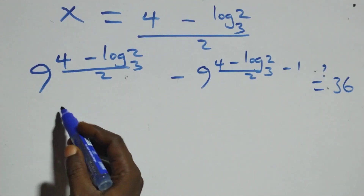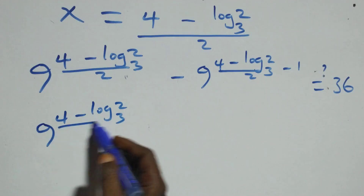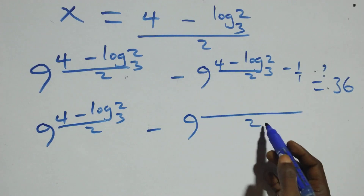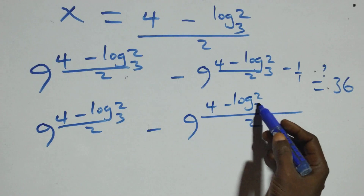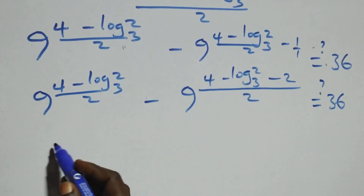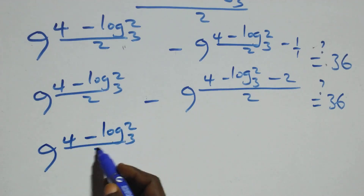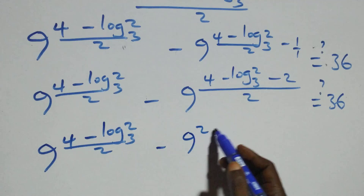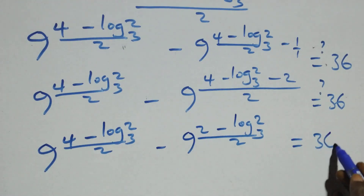Combining the exponent in the second term: (4 minus log₃2)/2 minus 1 equals (4 minus log₃2 minus 2)/2 equals (2 minus log₃2)/2. So we have 9 raised to power (4 minus log₃2)/2 minus 9 raised to power (2 minus log₃2)/2, equals 36.